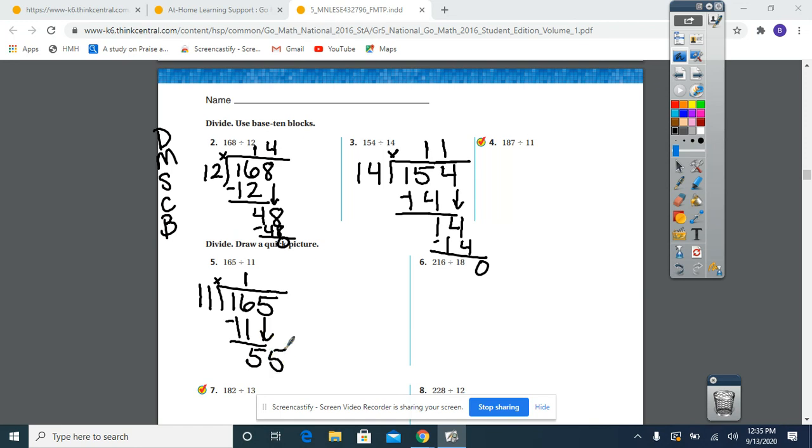Okay. 11 goes into 55 five times. So, 55 minus... let me see if I can fix that. It does not mean to mark through my 55. There we go. Minus 55 is zero. And then, again, if I wanted to check to see if this was right, then I would multiply it out.